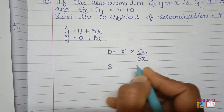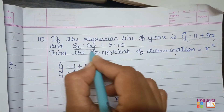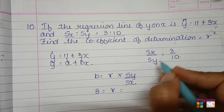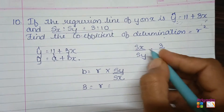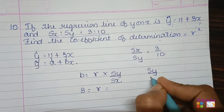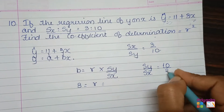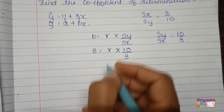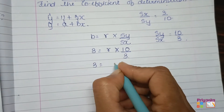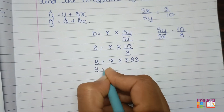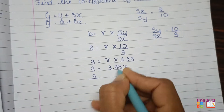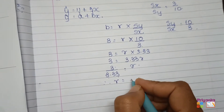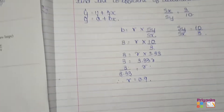Since b = 3 and sx/sy = 3/10, we need sy/sx = 10/3 ≈ 3.33. So the equation becomes 3 = r × 3.33. Dividing both sides by 3.33, we get r = 3 / 3.33 = 0.9, and therefore the coefficient of determination r² = 0.81.